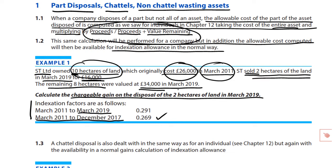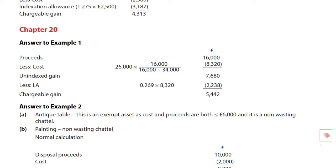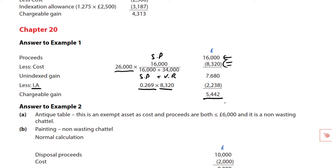Pause here, work that through, and check it against the model answer. The proceeds were £16,000, original total cost £26,000. The apportionment is sales proceeds of £16,000 over sales proceeds £16,000 plus value remaining £34,000. Multiply through to get your allowable cost, apply the indexation factor to December 2017, and derive your chargeable gain.